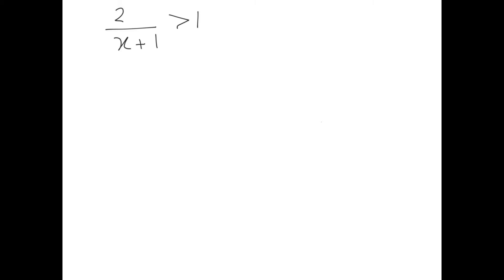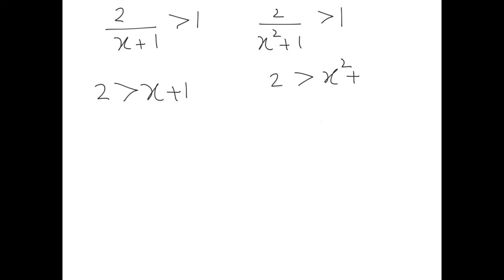Let's take two examples to understand this further. Consider 2/(x + 1) > 1 and 2/(x² + 1) > 1. Since the variable is in the denominator, if I cross-multiply, I get either 2 > x + 1 or 2 > x² + 1. One of these is correct and the other is wrong. The second is correct because x² + 1 is always a positive quantity, so I can multiply both sides by it. But I do not know the sign of x + 1, so writing 2 > x + 1 directly may give the wrong answer — never do this.